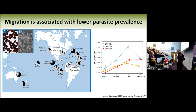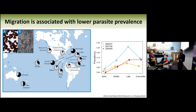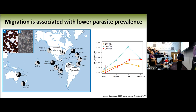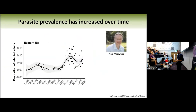These data from North America show parasite prevalence in the early, middle, and late season. Parasite prevalence goes up during the breeding season, then goes down in the fall because of migration. During the breeding season it rises because monarchs are breeding, spreading parasites, putting parasites on the plants. Then the overwintering phase brings it down again — a yearly cycle of parasite infection.